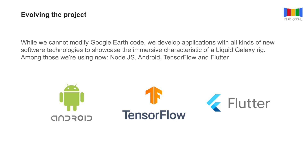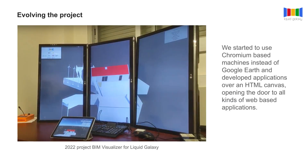As we cannot modify Google Earth because Google Earth code is made in C, we develop other applications over those technologies. You can see, for example, here on the screen, three screens of a Liquid Galaxy and a tablet — this project was a BIM Visualizer for Liquid Galaxy. We use Chrome browsers in each computer, and in every screen we launch an HTML canvas with Chrome. So we are not using Google Earth but Chrome web technologies — Chrome and HTML, and sometimes Node.js and other web applications. BIM stands for Building Information Modeling, and it's the de facto standard that both engineering and construction companies are using to manage more data for their construction plans.